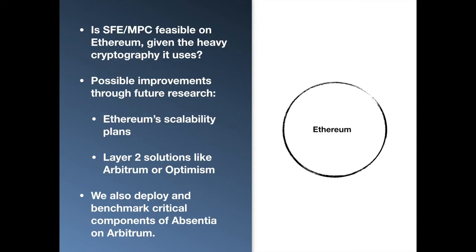One of the research questions we asked is whether secure function evaluation is feasible on Ethereum, as it uses heavy cryptography. Absentia establishes a benchmark for future research. For instance, Ethereum plans to address issues related to scalability, like more transactions per second. There are also layer 2 solutions like Arbitrum or Optimism that move blockchain functionality off of the main chain. We benchmarked Absentia's critical components on Arbitrum, which is a layer 2 solution. Optimism was not chosen because it wasn't sufficiently developed at the time.